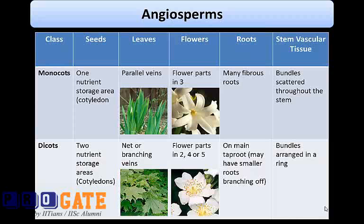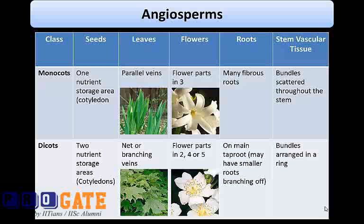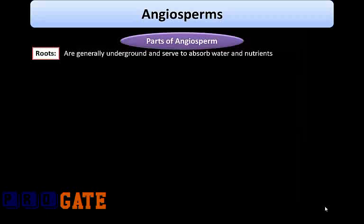Let's look at the differences between the two classes. Considering seeds: monocots have one nutrient storage area — one cotyledon — and dicots have two nutrient storage areas — two cotyledons. In leaves, monocots have parallel veins and dicots have netted or branching veins. Flower parts are in threes in monocots; flower parts are in twos, fours, or fives in dicots. Monocots have many fibrous roots; dicots have one main taproot with smaller roots branching off. In monocots, vascular tissue bundles are scattered throughout the stem; in dicots, bundles are arranged in a ring.